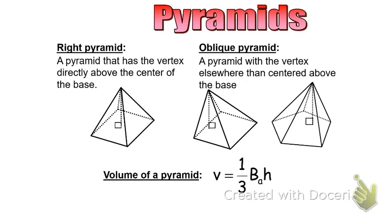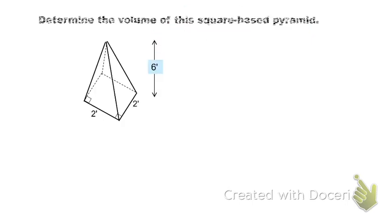So let's look at some examples now. Here is a pyramid — a square-based pyramid, showing a height of 6 feet. Because it is a square-based pyramid where the sides are 2 by 2, we can say the volume is going to be one-third the square's area times the height of 6.